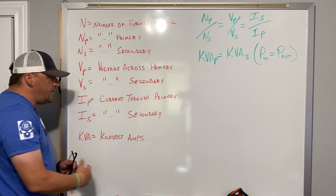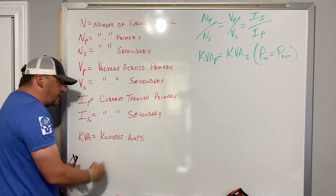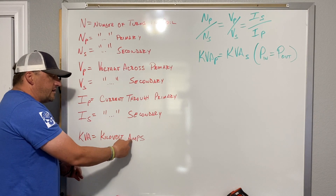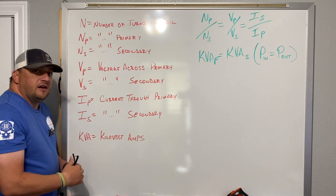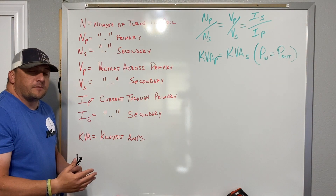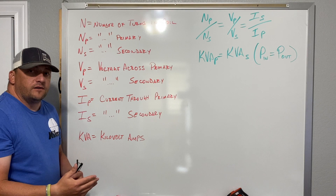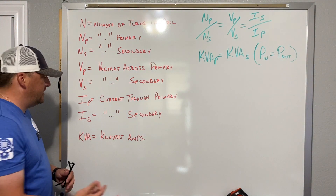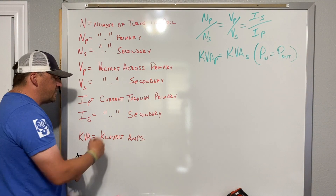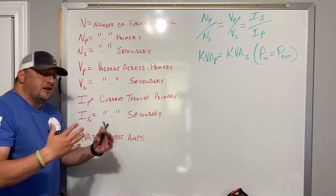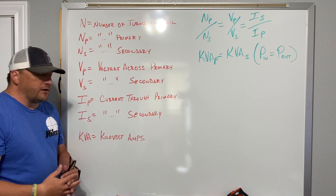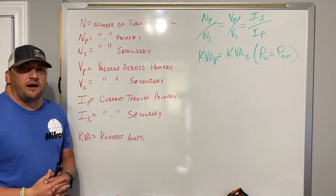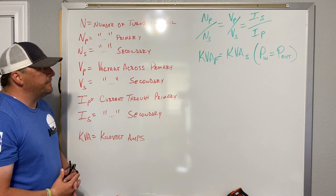So what is volt-amps? That is volts times current. And the formula for power is P equals I times V — current times voltage. So you see where we're going with this — KVA is basically going to equal our power.